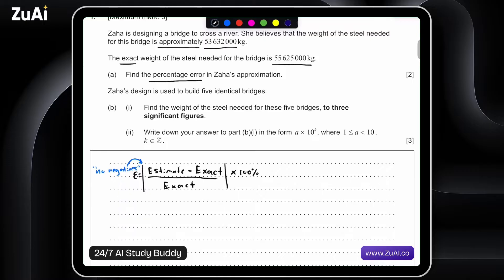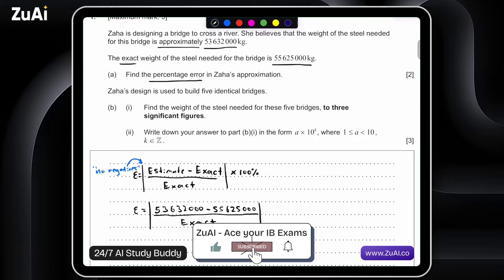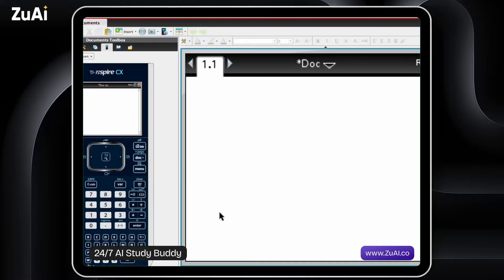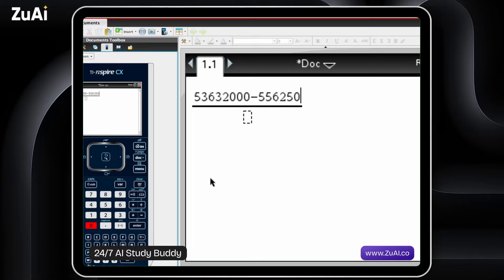So let's write out our percentage error for these values. Our estimate was 53,632,000. Our exact was 55,625,000. And we'll write this out over our exact value. Lastly, we want to represent this as a percentage, so at the very end we'll multiply by 100. Okay, let's go to the calculator screen and work this out. Let's go into the calculator. Let's set up a fraction. 53,632,000 minus 55,625,000, and then we'll put this over our exact value, 625,000.